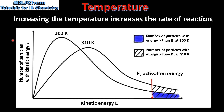Here we have a Maxwell-Boltzmann distribution curve for two gases, one at 300 Kelvin and one at 310 Kelvin. The blue area represents the number of particles with energy greater than activation energy at 300 Kelvin. The shaded area represents the number of particles with energy greater than the activation energy at 310 Kelvin. As you can see, at 310 Kelvin a greater proportion of particles have energy greater than the activation energy.